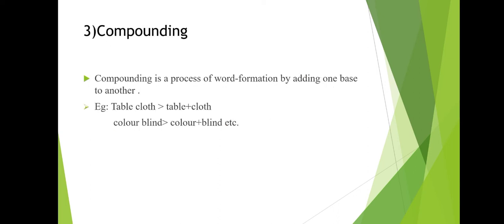The next process is compounding. Compounding is a process of word formation by adding one base to another. For example, 'table' plus 'cloth' gives 'tablecloth' — table is one base, cloth is one base. Another example is 'colorblind': color and blind are combined to form a new word. If you add one base to another and attach them, that process is compounding.